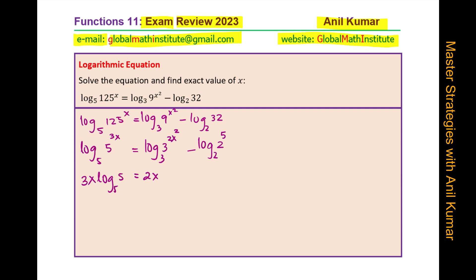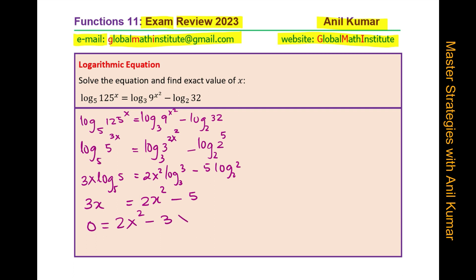We rewrite as 3x times log base 5 of 5, equals 2x squared times log base 3 of 3, minus 5 times log base 2 of 2. Since each of these logarithms equals 1, we get 3x = 2x² - 5. Bringing all terms to the right-hand side gives us the quadratic equation 2x² - 3x - 5 = 0.